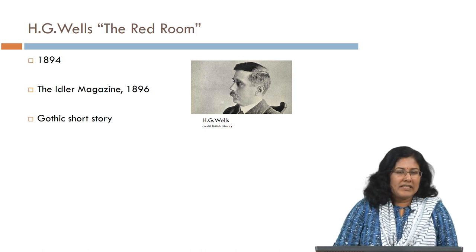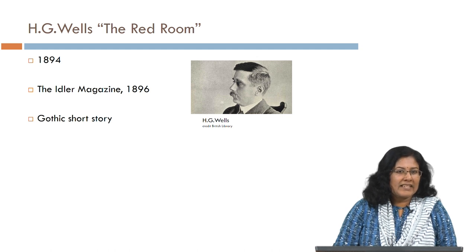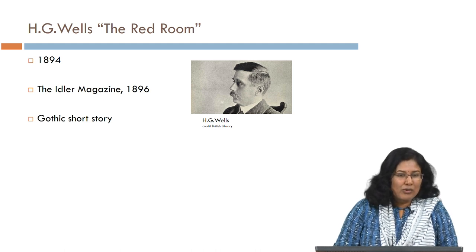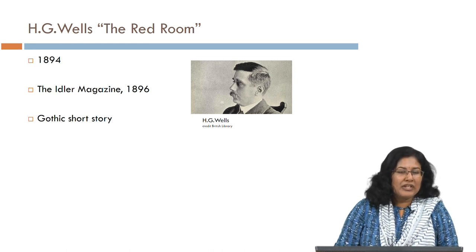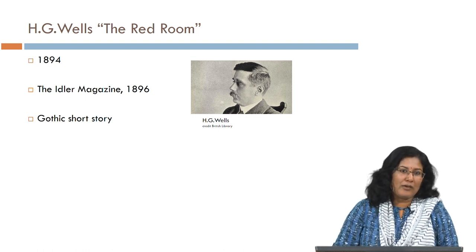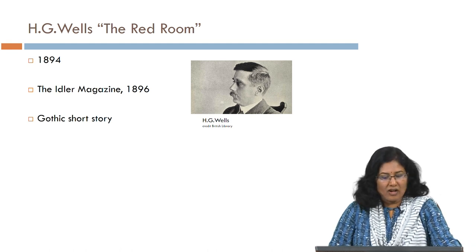The particular story, The Red Room, was written in 1894 but published in the Idler magazine in 1896. It is a story in the Gothic mode. H.G. Wells usually writes science fiction, but he makes a change in this particular story to write a horror or supernatural story which can be termed Gothic.